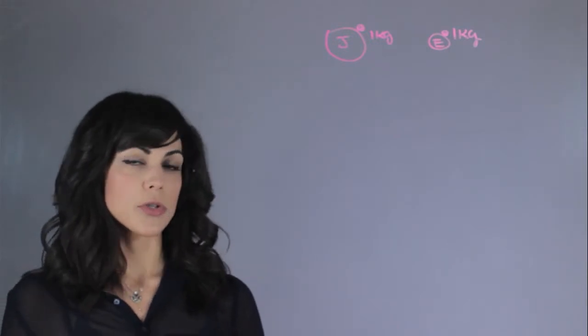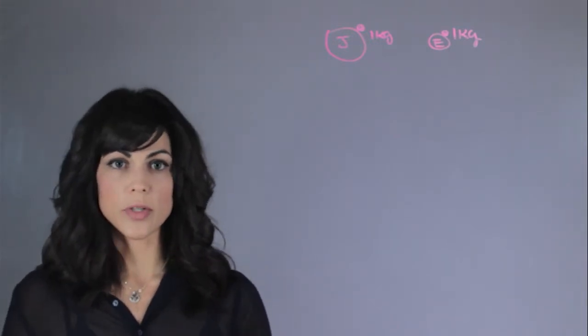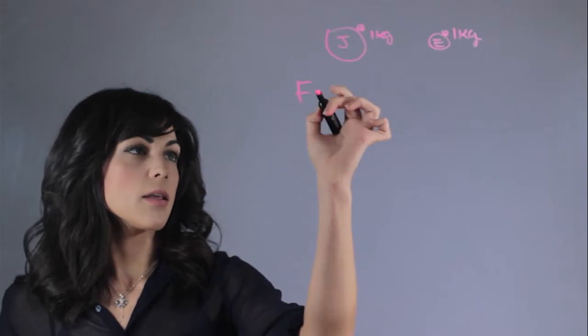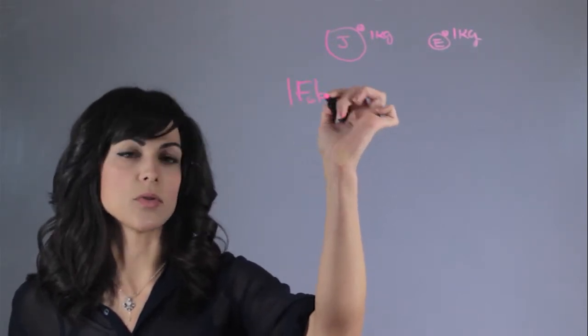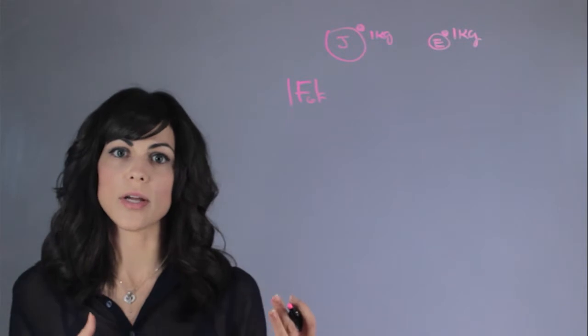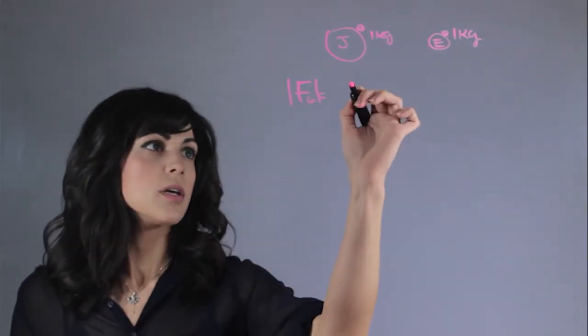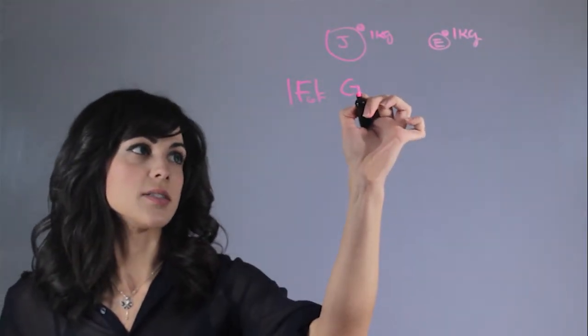The first thing that we need to know is the equation for the gravitational force. The gravitational force, the absolute value of it because we're looking just at the strength, not the direction, is the gravitational constant G,